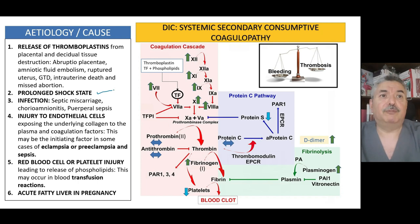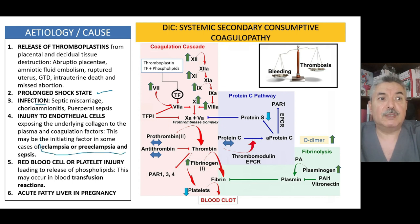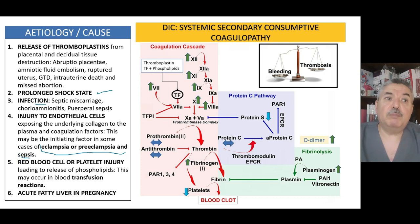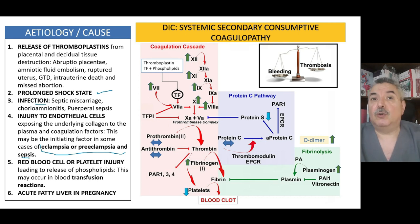Other causes include infection — sepsis or severe sepsis — injury to endothelial cells as in eclampsia and preeclampsia, red blood cell or platelet injury as in transfusion reactions. If you give a wrong transfusion, you can induce hypercoagulable DIC. Acute fatty liver of pregnancy is another cause. So DIC is always secondary, and these are its causes.